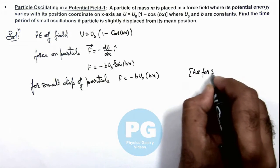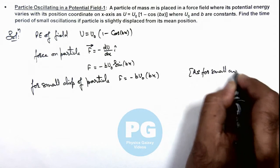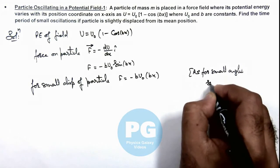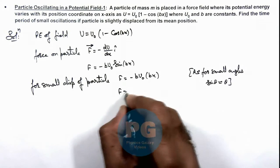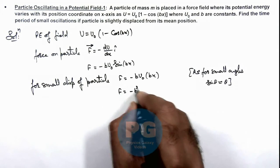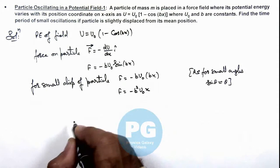for small angles we can use sine theta to be approximated as theta. So the value of force acting on particle is minus b²U₀x.